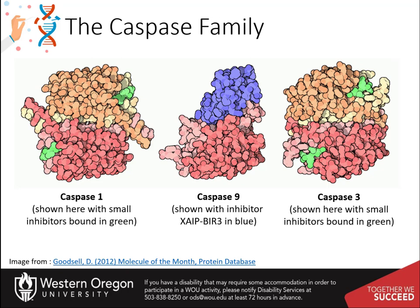Caspases are the executioners of apoptosis. Once activated by gatekeeper molecules such as apoptosomes, they chop up strategic proteins in the cell. The name refers to two properties of these enzymes. First, they are cysteine proteases — they use a sulfur atom in the cysteine to perform the cleavage reaction, the C in caspases. Second, they cut proteins next to aspartate amino acids in their chains, the ASP in caspases. They do not cut indiscriminately; instead, they are designed to make exactly the right cuts needed to disassemble the cell in an orderly manner.